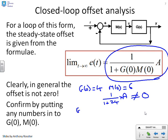Or I could put in a different number. G of 0 equals 3. M of 0 equals 20. Some quite big numbers there. And you will now get 1 over 1 plus 60 into A. Again, this is not 0.